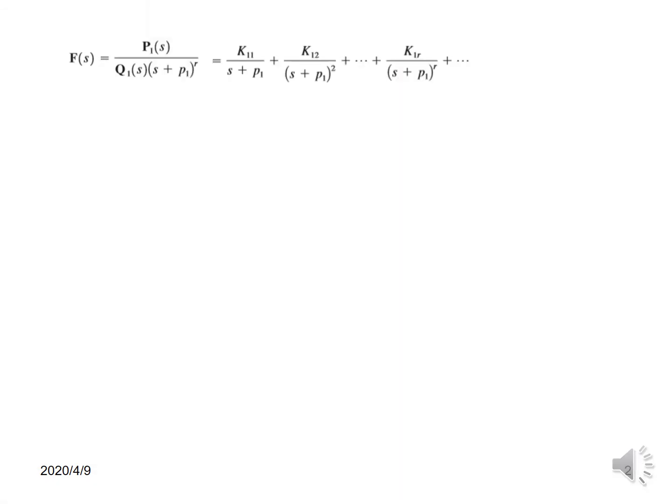Now before we start the actual problem solving, let's build some basic concepts. If the function is given such that one of the denominator factors has a power r, then we break it down. We write k11 with the denominator factor at simple power 1, then k12 with power 2, and similarly k13 with power 3, and so on.